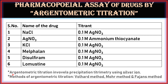These are the important points to be remembered. Argentometric titration involves precipitation titrometry using silver ion, and is also considered as precipitation titration. The methods of argentometric titration include the Volhard method, Mohr method, and Fajans method.